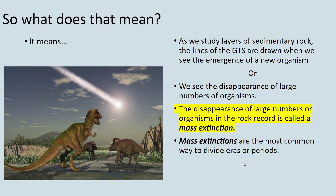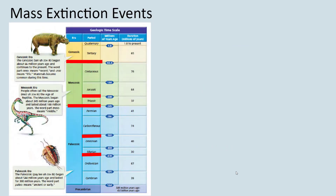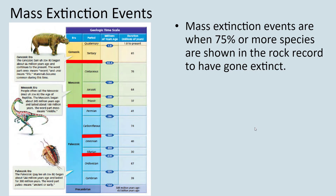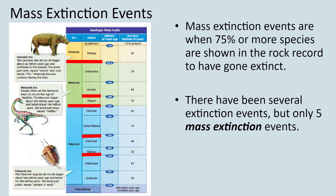Mass extinctions are the most common way that we divide eras or periods. Extinction means a species dies out and is no longer found on the planet — like dinosaurs or dodo birds. Mass extinction events are when 75 percent or more of species are shown in the rock record to have gone extinct in a fairly short period of time, meaning these big die-offs of large amounts of species all at once — with 'at once' meaning within a few thousand years in geologic time.